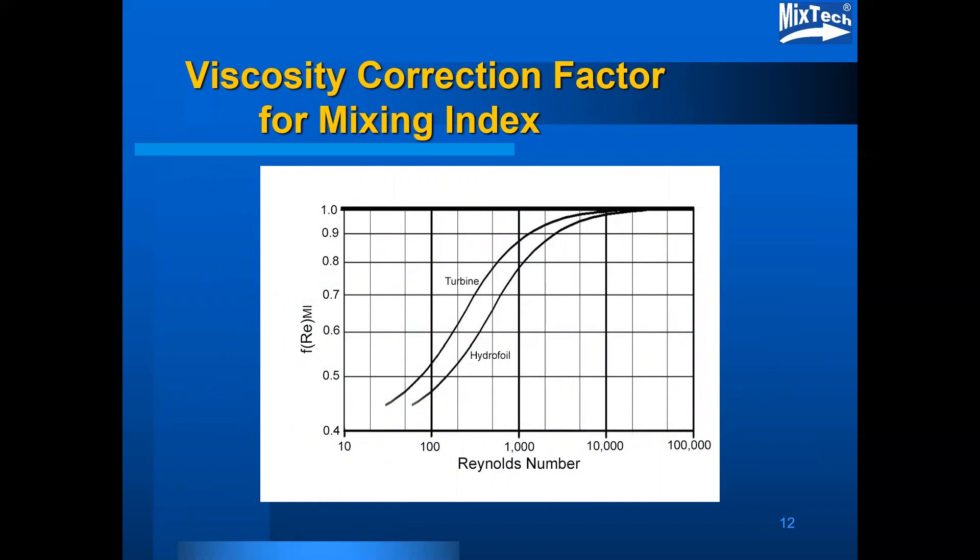This shows a couple of curves. The top curve is for turbine-style impellers, basically any impellers with a turbulent power number greater than or equal to one. The lower curve shows the effect on lower power number impellers such as hydrofoils.